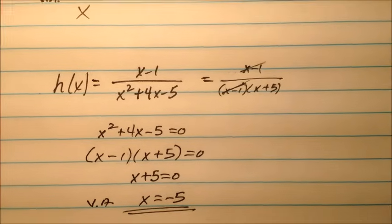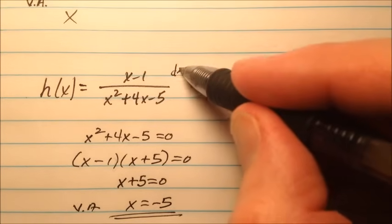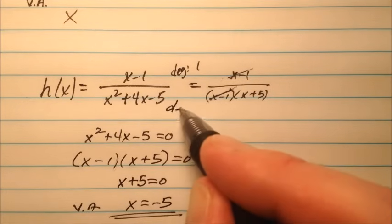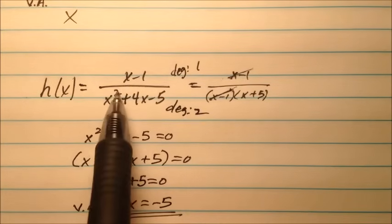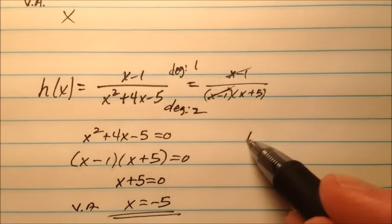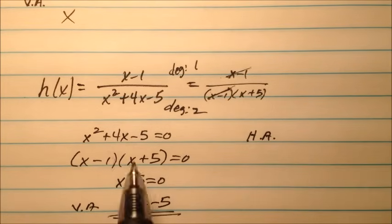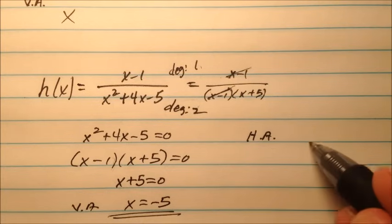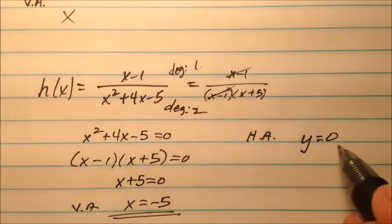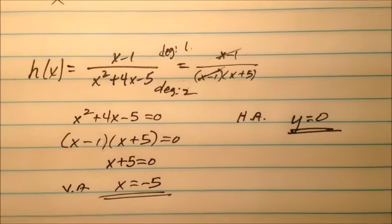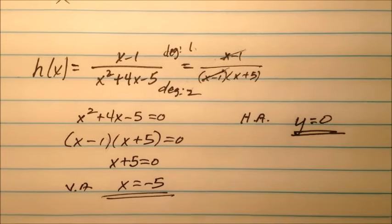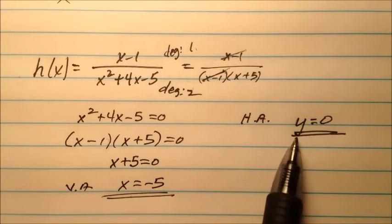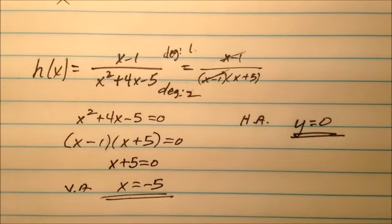For the horizontal asymptote, the degree of the numerator is 1 and the degree of the denominator is 2. Since the numerator's degree is smaller, the horizontal asymptote is y equals 0. So this graph has two asymptotes: a vertical asymptote at x equals negative 5 and a horizontal asymptote at y equals 0.